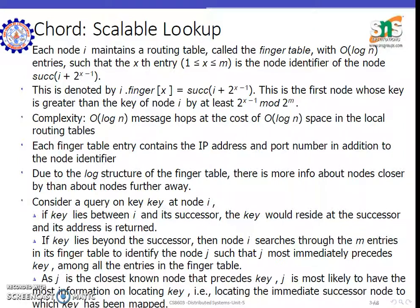This is called scalable lookup. Scalable means if you are expanding the call, it does not affect the system. In this we are using a table called O(log n), where x is such that x does not equal y. The successor node is i plus 2 power x minus 1. We consider the complexity of O(log n), called message hops, and O(log n) space for the local routing table.